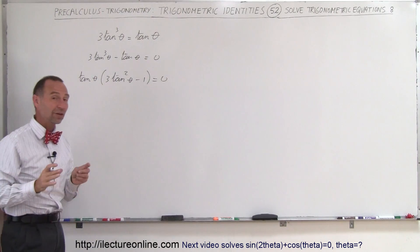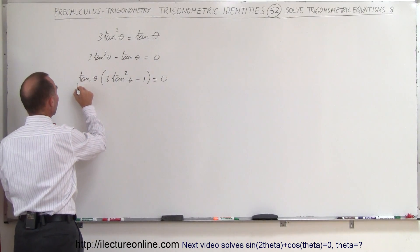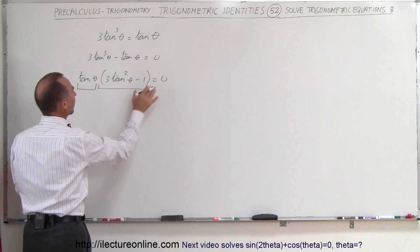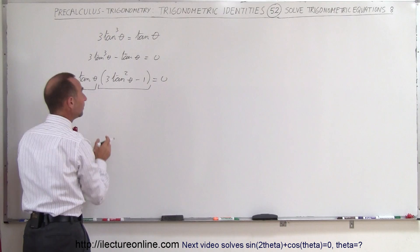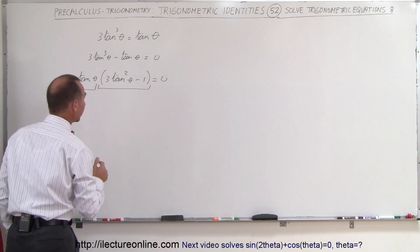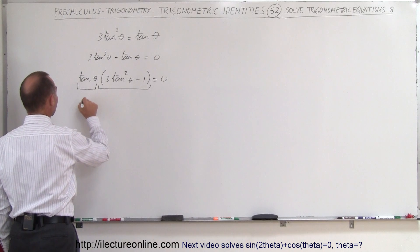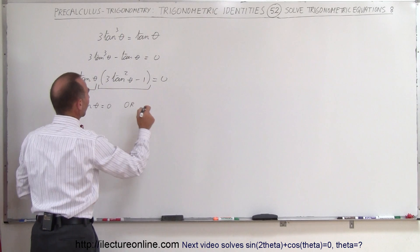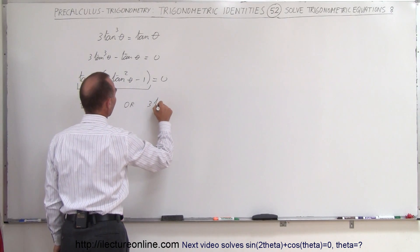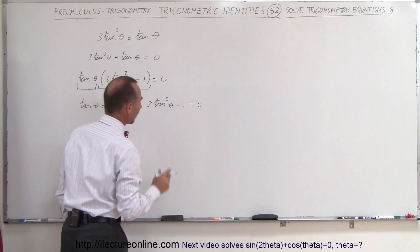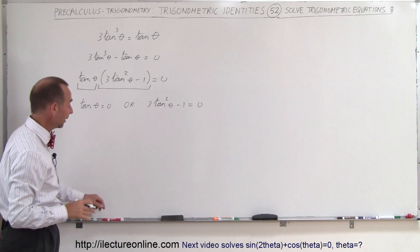Now we have a product: tangent of theta times the quantity (3tan²θ − 1) set equal to zero. When we multiply two factors and get zero, either one or the other factor must equal zero. So either tan θ = 0, or 3tan²θ − 1 = 0. We solve these two equations independently.